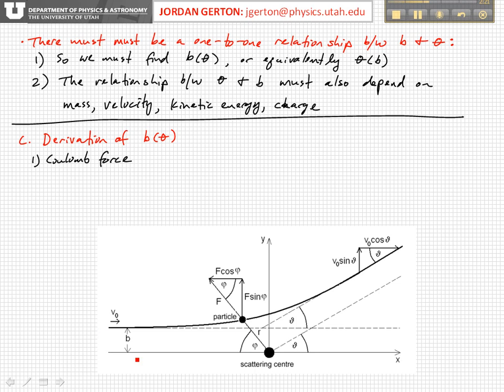As I'm showing in this diagram here, which is similar to the one I showed you before but now has a little more detail, the Coulomb force is pointing radially away from the scattering center. And its magnitude is equal to the charge of the incoming particle times the charge of the nucleus, divided by 4π epsilon naught R squared.